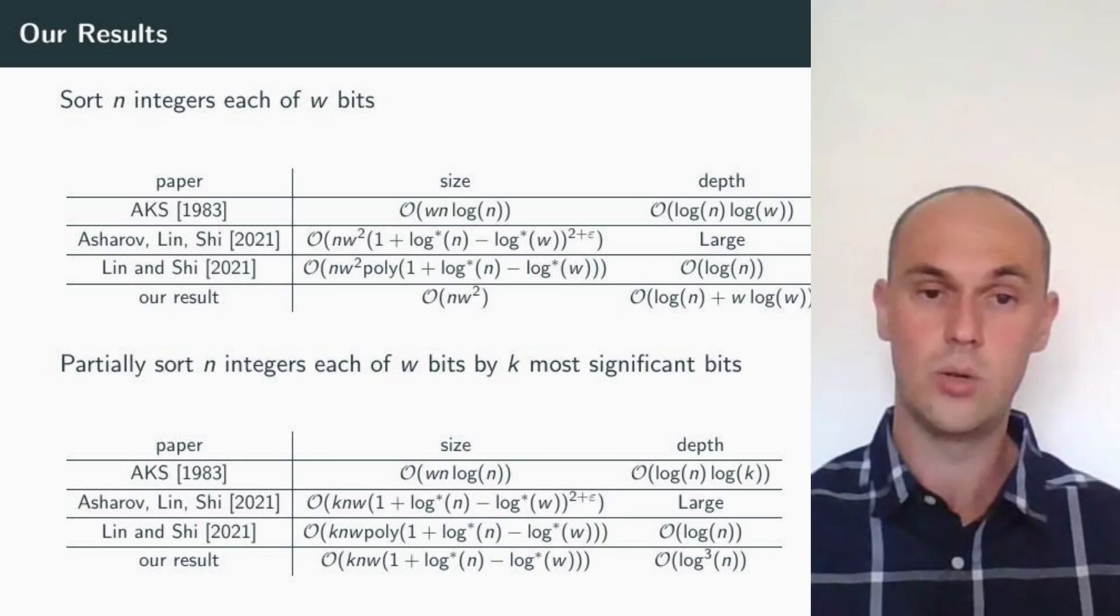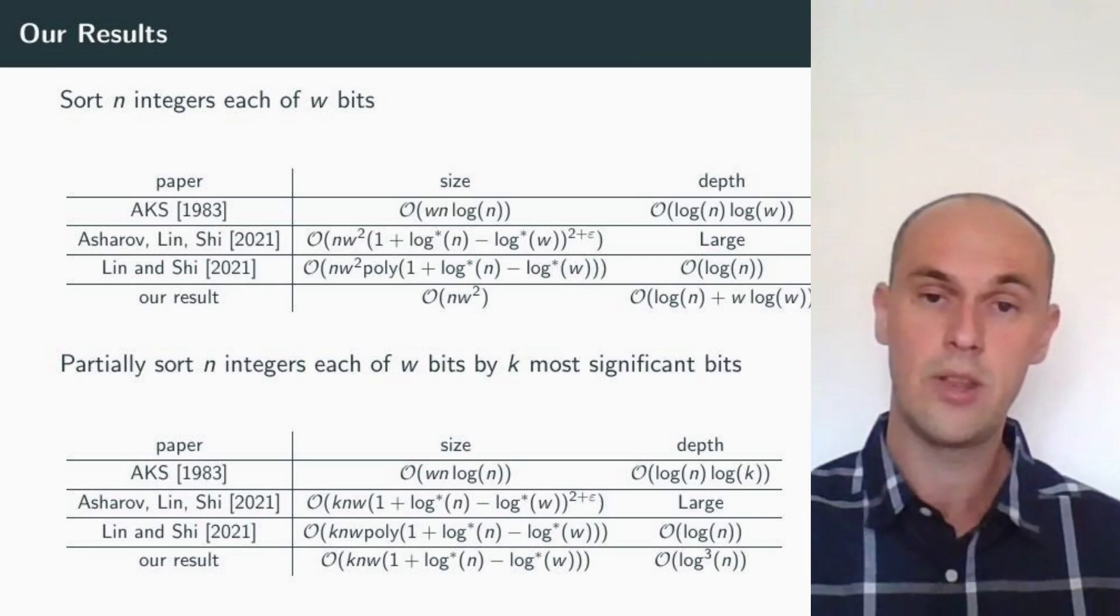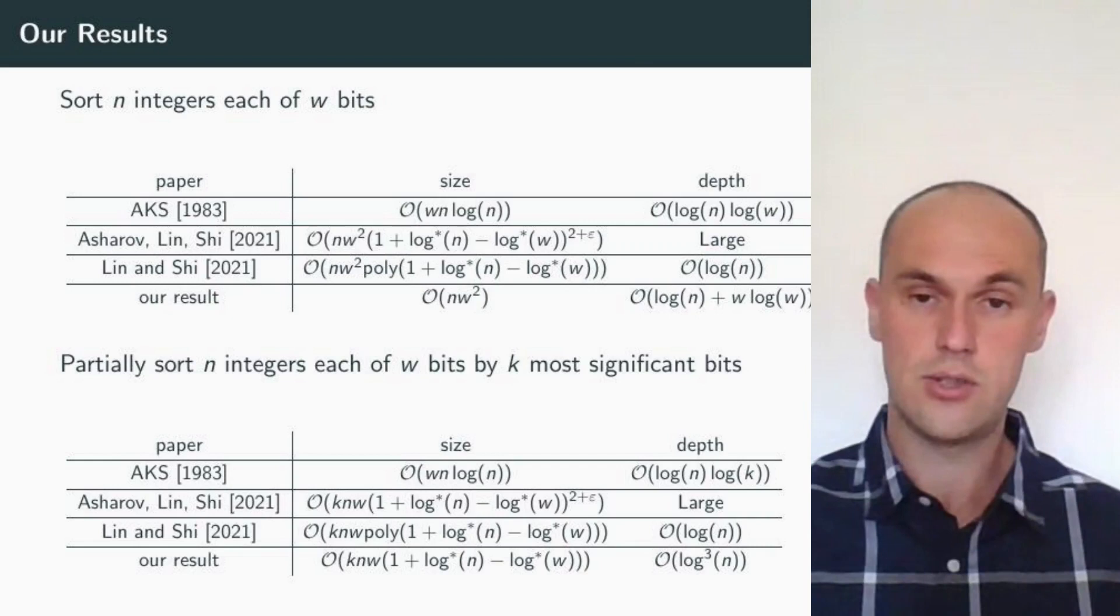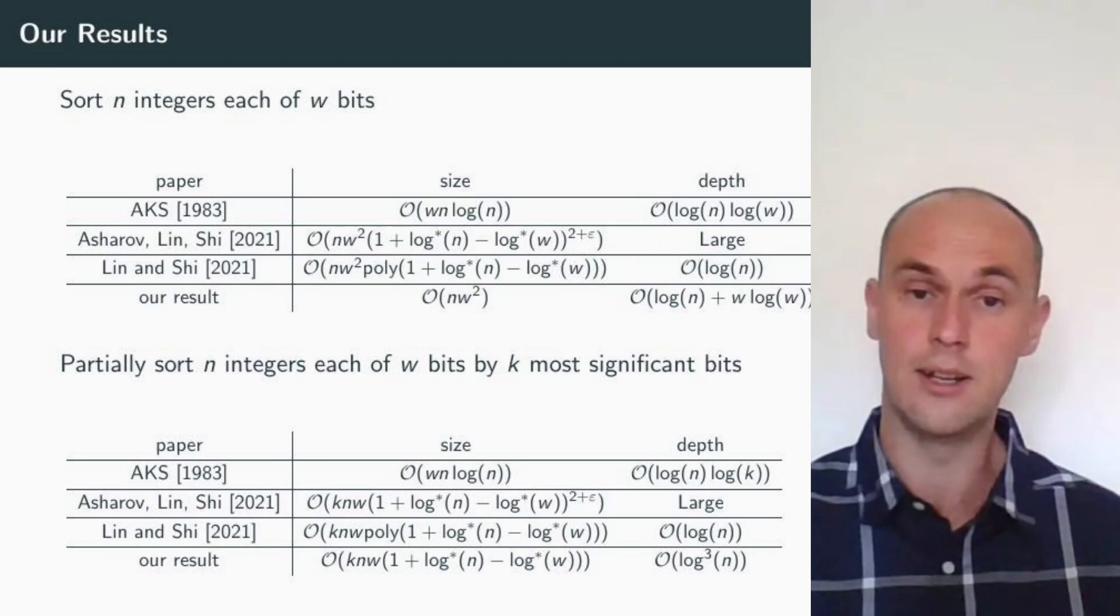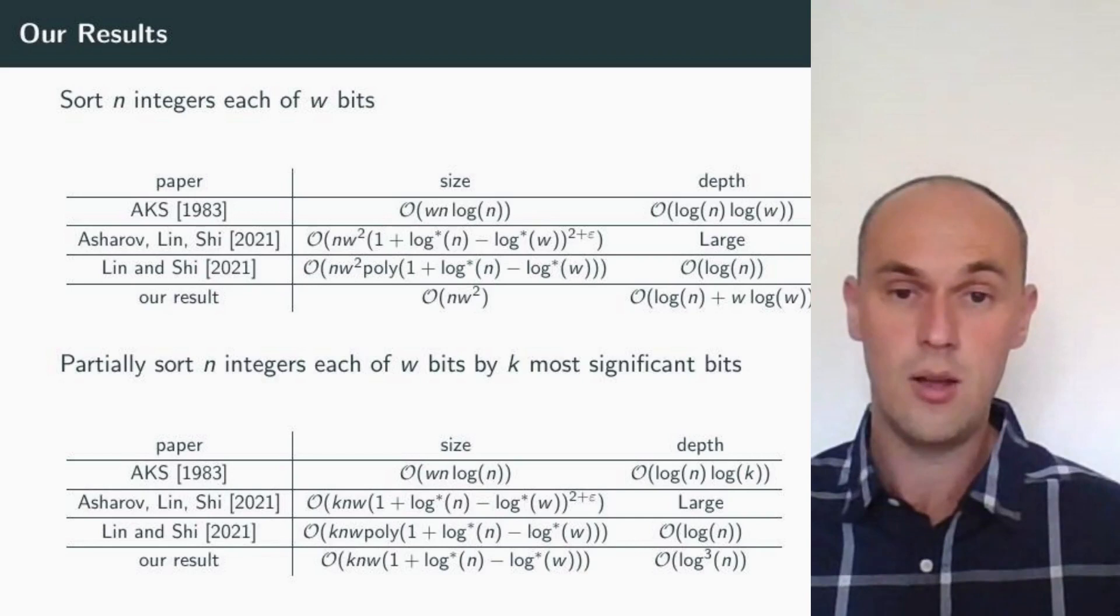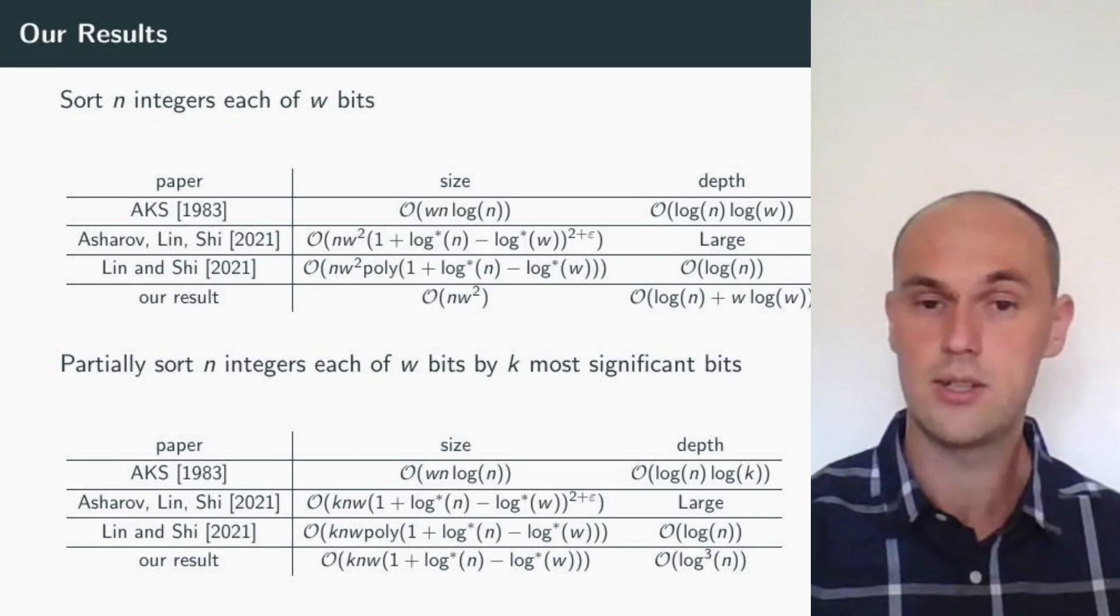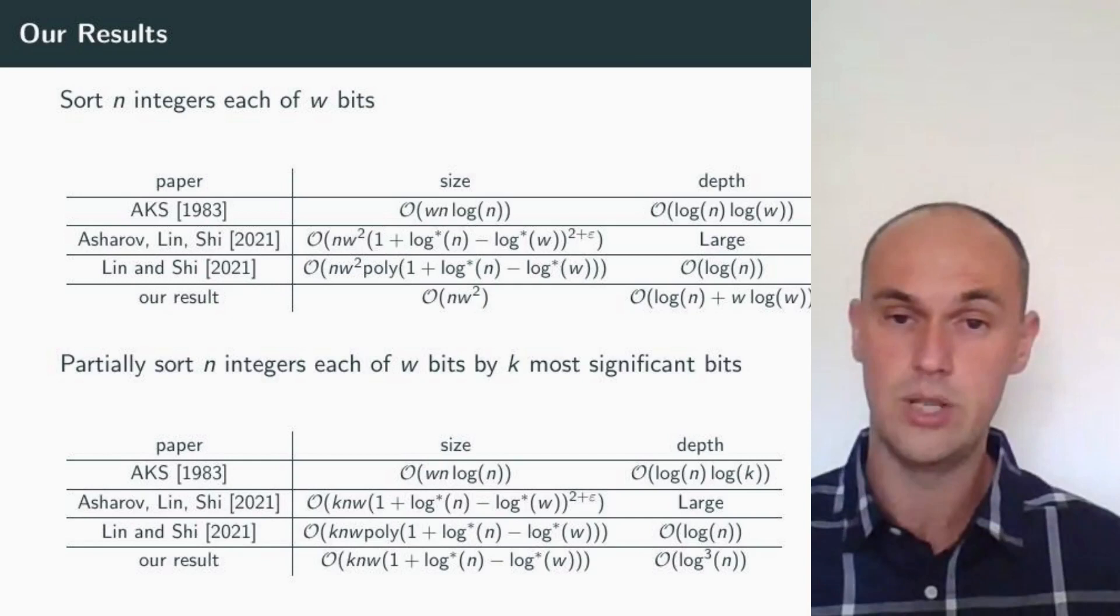And the results of both Asharov, Lin and Shi and Lin and Shi were actually more general. They considered partial sorting of n integers, each represented in binary by w bits, and sorting them partially by their k most significant bits. Again, Ajtai-Komlós-Szemerédi sorting network gives us same size, but slightly lower depth of log n times log k instead of log w. But Asharov, Lin and Shi gave circuits of size k n w times a term in the iterated logarithm and in the subsequent paper logarithmic depth.